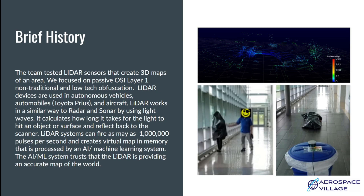The presentation we shared at the DEFCON 27 Car Hacking Village and Drone Wars Village focused on passive OSI layer 1, non-traditional, and low-tech obfuscation. LiDAR devices are used in autonomous vehicles, drones, phones, and aircraft. LiDAR works in a similar way to radar and sonar by using light waves. It calculates how long it takes for the light to hit an object or surface and reflect back to the scanner. LiDAR systems can fire as many as 1 million pulses per second and create a virtual map in memory that is processed by an AI machine learning system. The AI machine learning system trusts that the LiDAR is providing an accurate map of the world. In the images to the right, you can see us using the device, detecting things in the room around us.